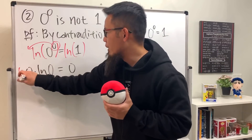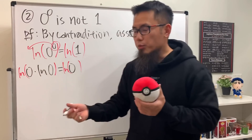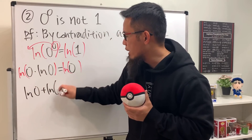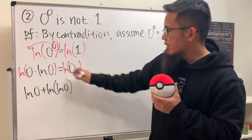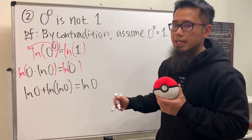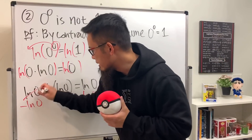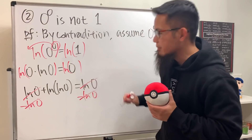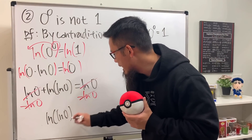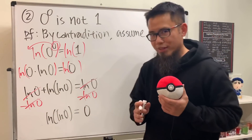Instead, let's take ln of both sides again. On the left, using the log property, we get ln(0) plus ln(ln(0)). On the right we have ln(0). Now subtract ln(0) from both sides — those terms cancel — and we get ln(ln(0)) equals zero.